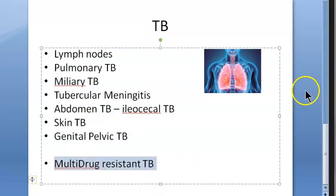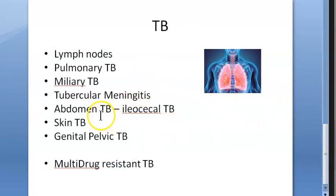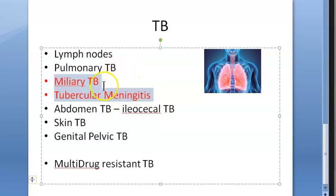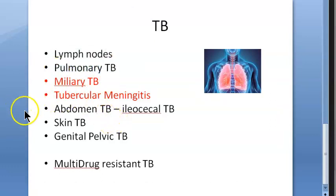There is also multi-drug resistant tuberculosis. Two forms of TB can be prevented by the BCG vaccine, and it can protect against pulmonary TB up to 50 percent.